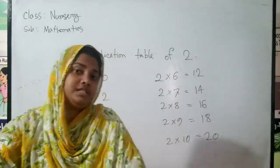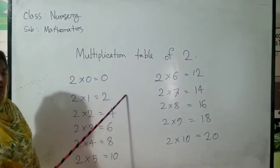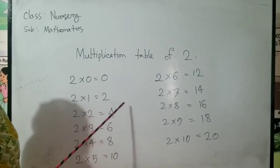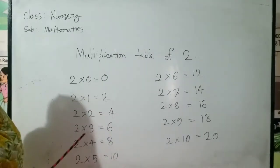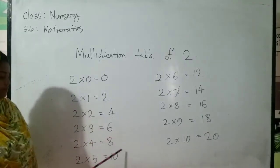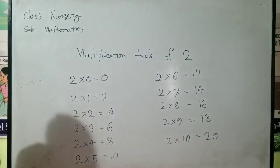So, dear students, say with me. Two zeros are zero, two ones are two. Two twos are four. Two threes are six. Two fours are eight. Two fives are ten.